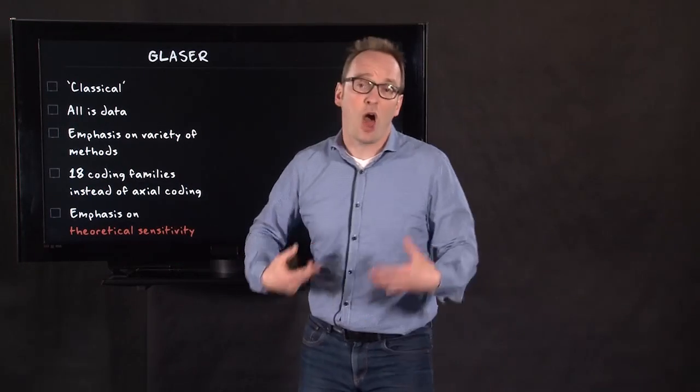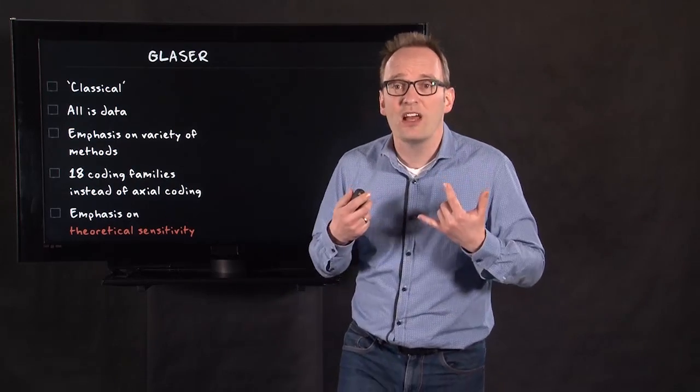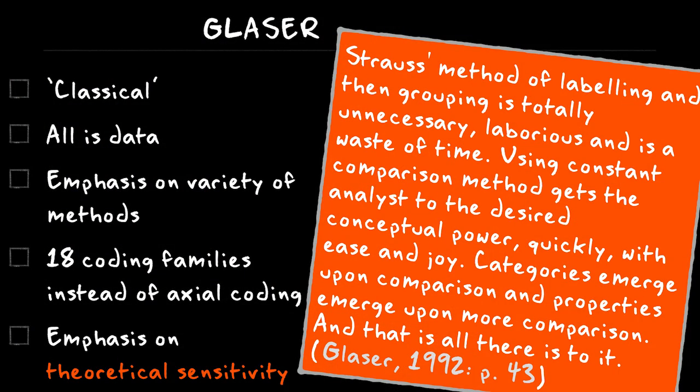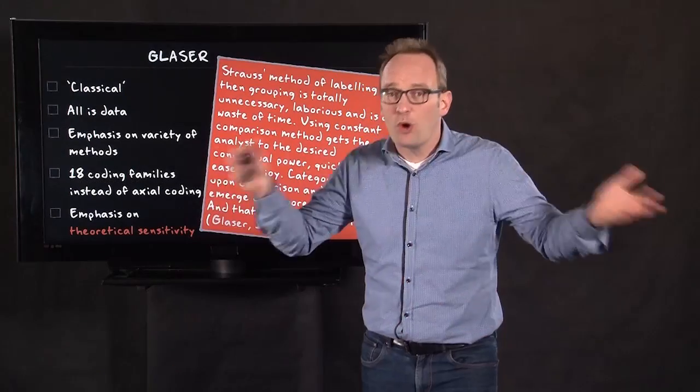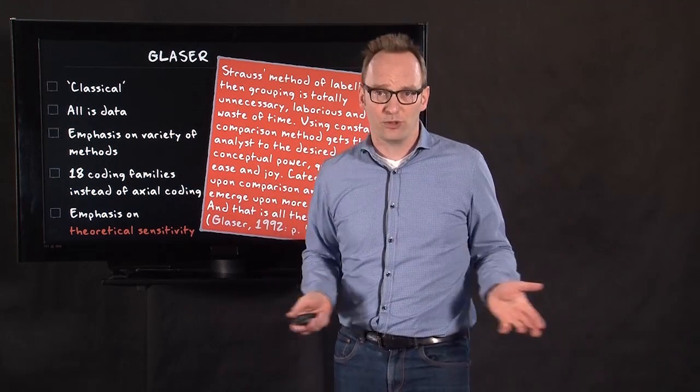And he focuses a lot on, as I said before, theoretical sensitivity. It's much less formal, much freer. There's less of a recipe. And he's very strong with his language. For instance, he says this: Strauss method of labeling and then grouping is totally unnecessary, laborious, and it's a waste of time. Using constant comparison methods gets the analyst to the desired conceptual power quickly, with ease and joy. Categories emerge upon comparison and properties emerge upon more comparison. And that's all there is to it. Do away with all the small steps. Just try to do constant comparison and theoretical sensitivity.